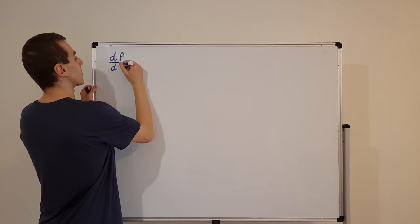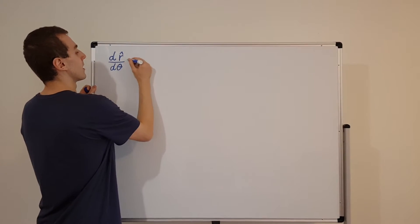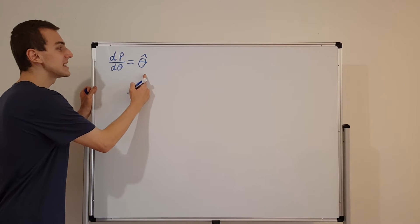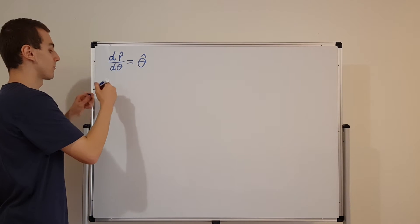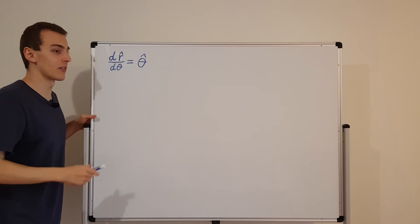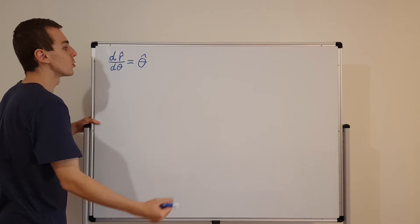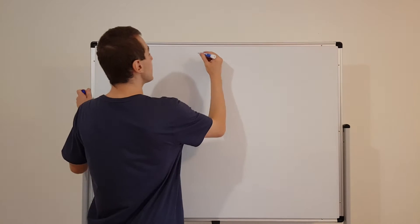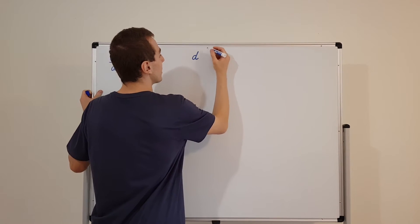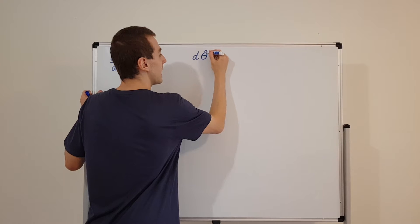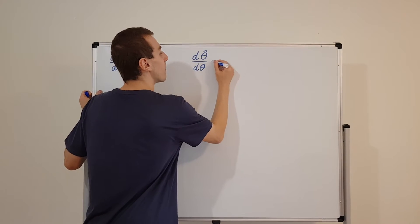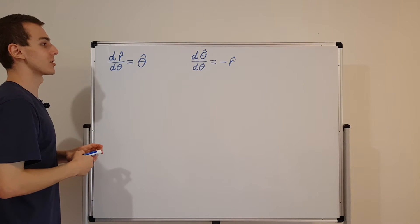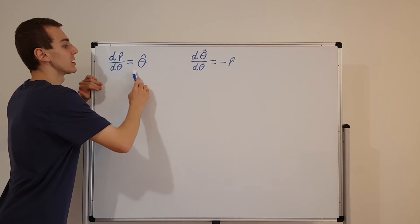The theta derivative of r hat, as we found in the previous video, is theta hat. This theta hat is a unit vector, and r hat is also a unit vector — theta here is just a scalar, the angle. So d(r hat)/d(theta) = theta hat, the tangential unit vector. And if we take the derivative with respect to theta of theta hat, we get something analogous but different: we get minus r hat, the negative of the radial unit vector.